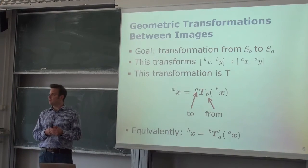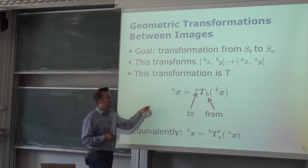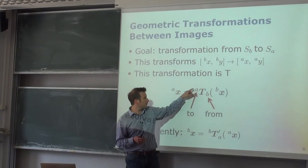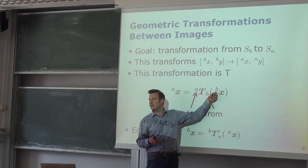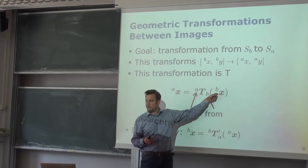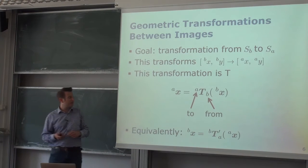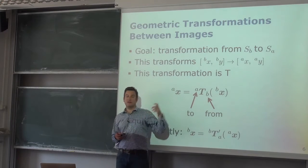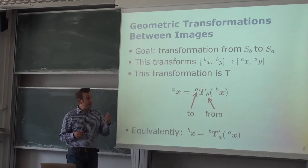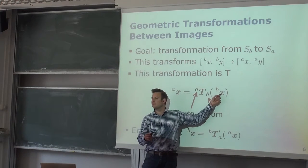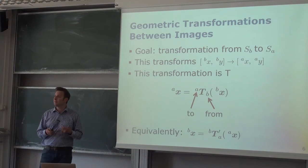We said we have two images: we start with image A and image B. B was our input image and A was the desired output image, and we describe everything via a transform. We read this as a transform from B, the input image, to the output image A. This transform maps a coordinate — not an intensity value — of a pixel to a new location. The problem identified is that mapping from integer pixel locations in B may produce non-integer values in A, requiring interpolation.